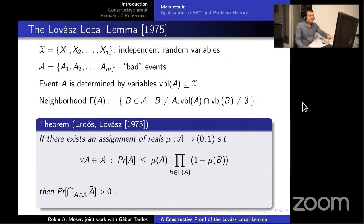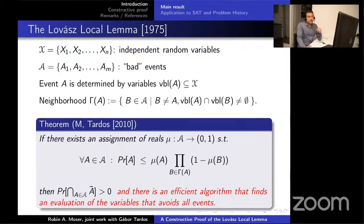The local lemma, as discovered in 1975 by Paul Erdős and László Lovász, basically says that if these neighborhoods are sufficiently small, then we can guarantee the existence of an assignment of values to the variables so that none of the bad events occur. But the question that was left open was whether there also exists an efficient algorithm for actually discovering such an assignment.